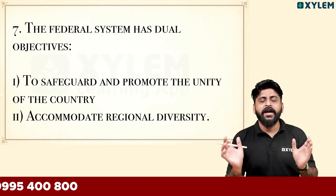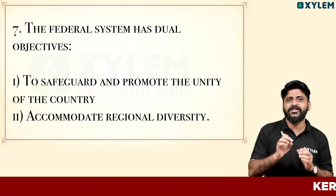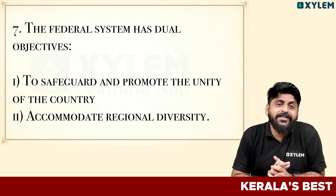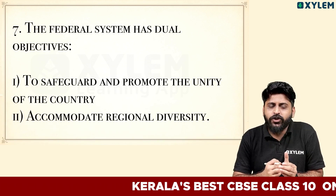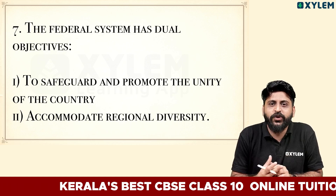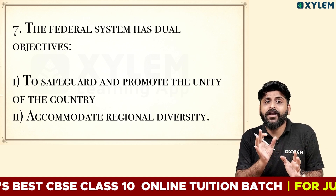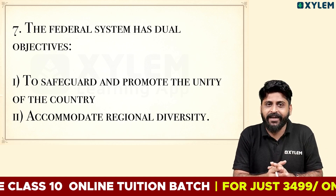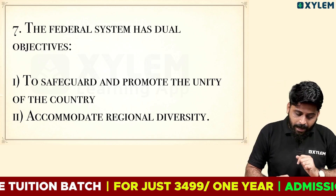The seventh feature: the federal system has dual objectives. The first is to safeguard and promote the unity of the country. The second is to accommodate regional diversity.